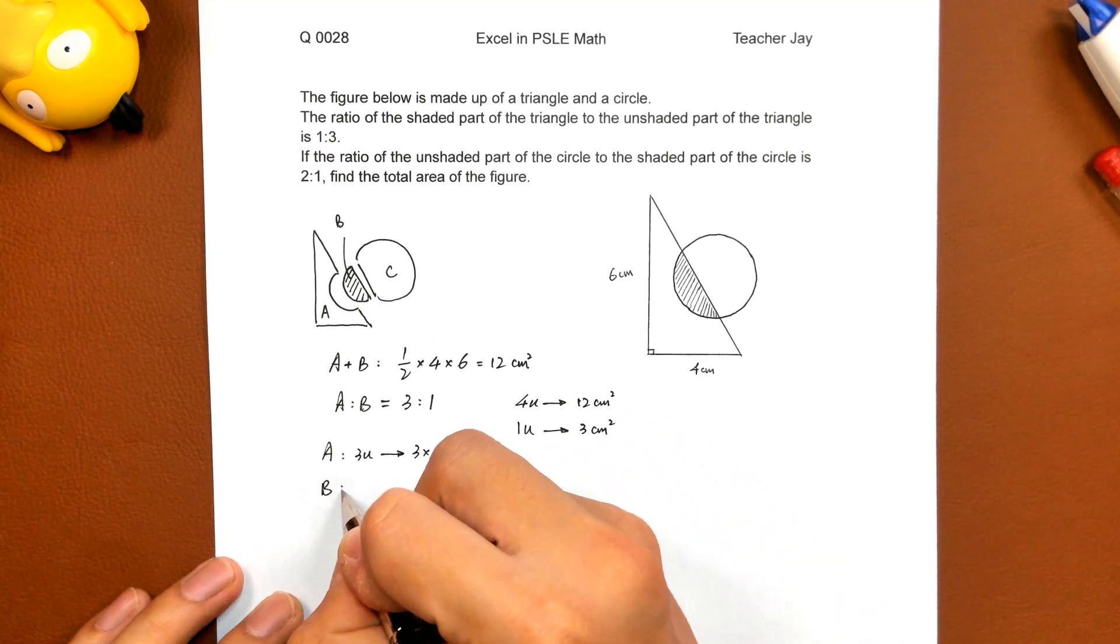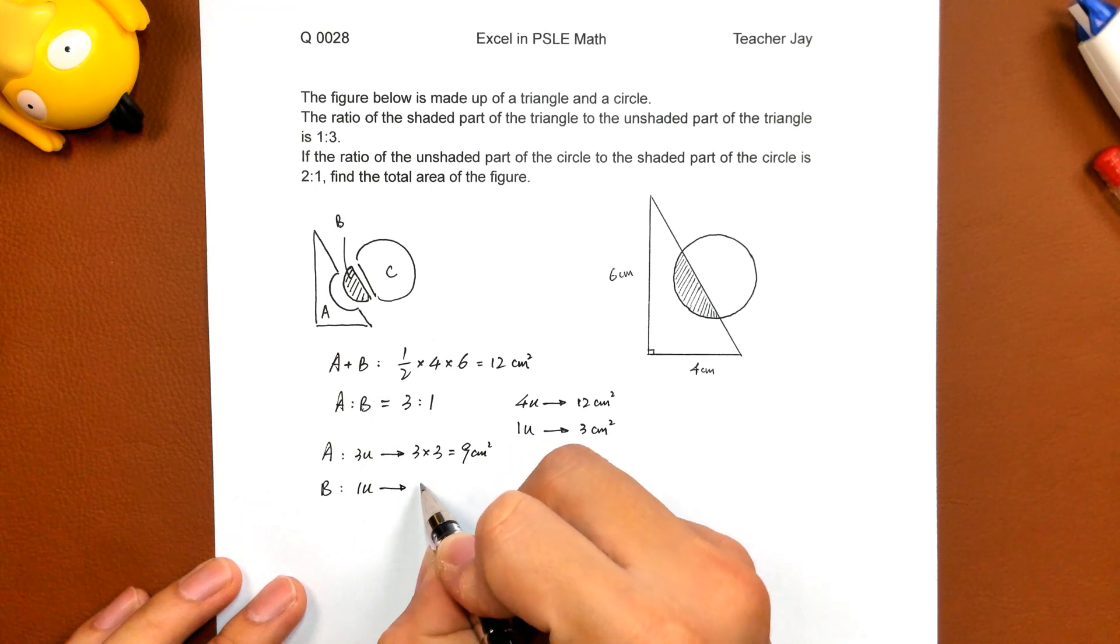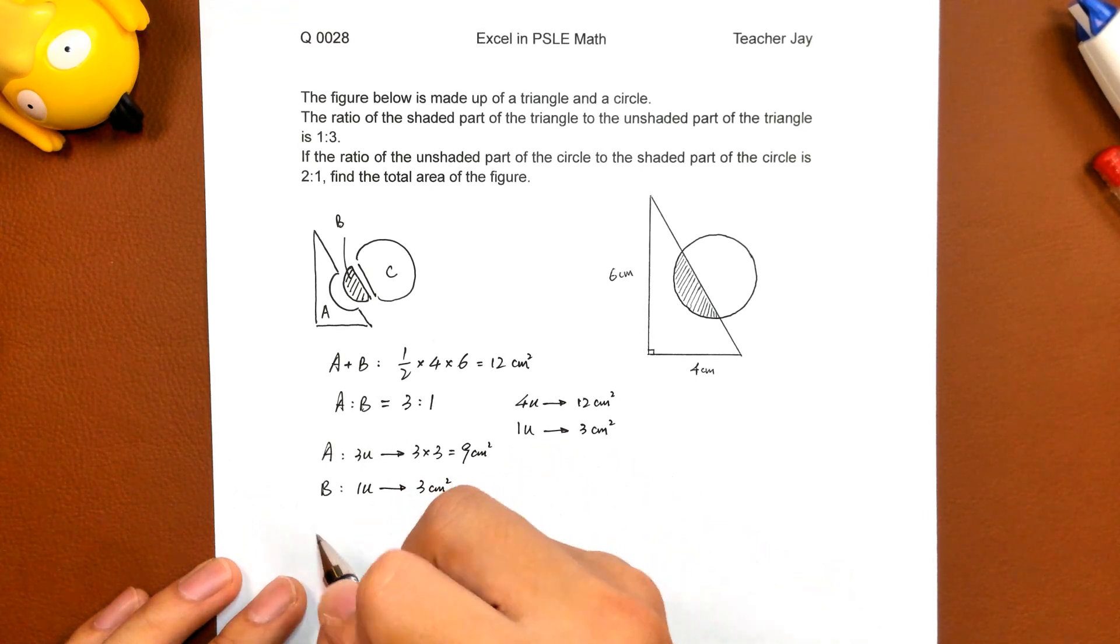And B, shaded part, 1 unit, 3 square centimeters.